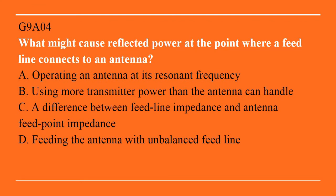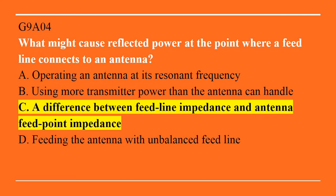G9A04: What might cause reflected power at the point where a feed line connects to an antenna? A. Operating an antenna at its resonant frequency. B. Using more transmitter power than the antenna can handle. C. A difference between feed line impedance and antenna feed point impedance. Or D. Feeding the antenna with an unbalanced feed line. The answer is C — a difference between feed line impedance and antenna feed point impedance.